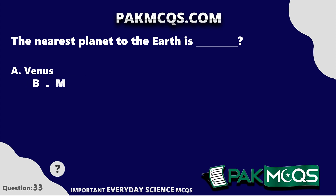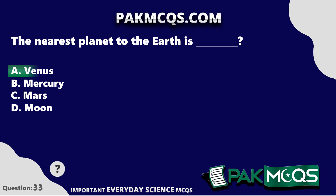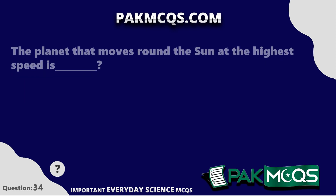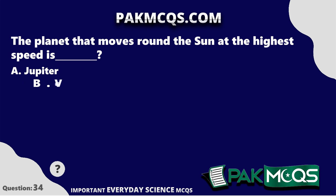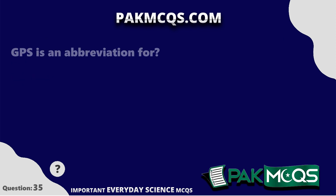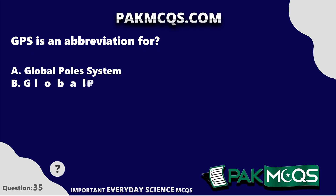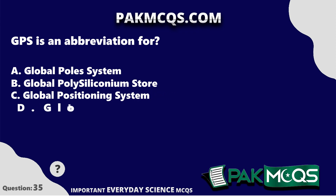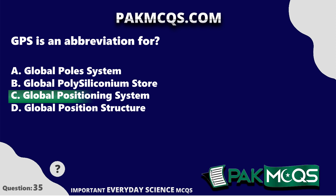The nearest planet to the earth is Venus. The planet that moves round the sun at the highest speed is Mercury. GPS is an abbreviation for Global Positioning System.